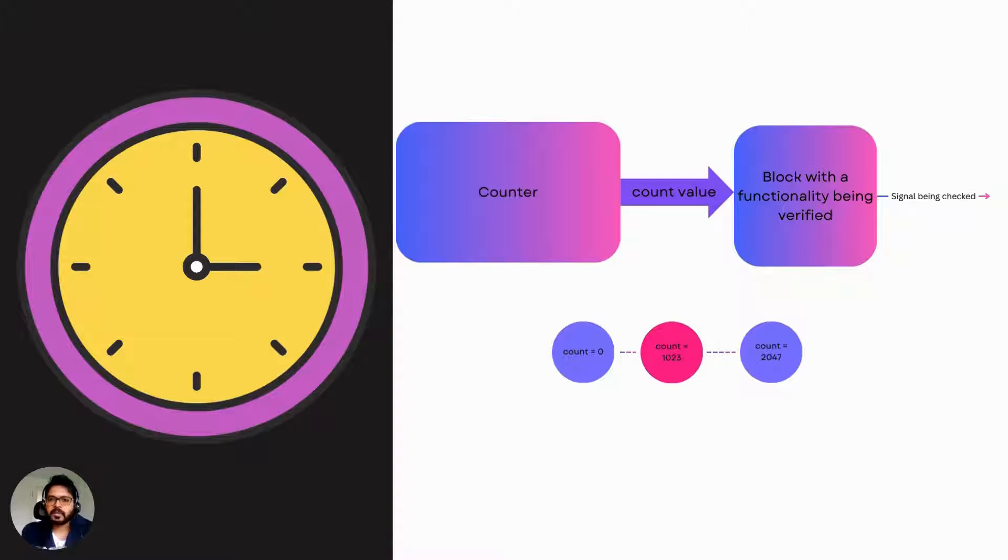What if we could reset our counter to 1023 out of reset in just one clock? Same way we did while verifying the alarm clock functionality. The length of the counter example will get reduced from 1023 clocks to one or two cycles. That would be amazing. Counter abstraction can help you do that.